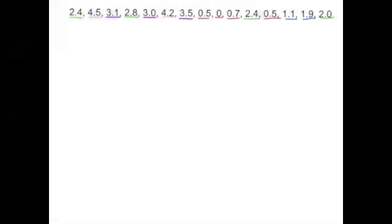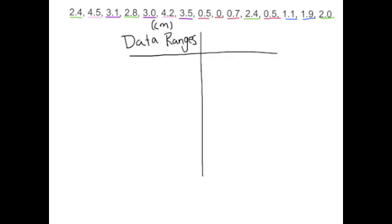For the frequency distribution table, I'm going to start by taking the data and grouping it into data ranges, which are also called bins.